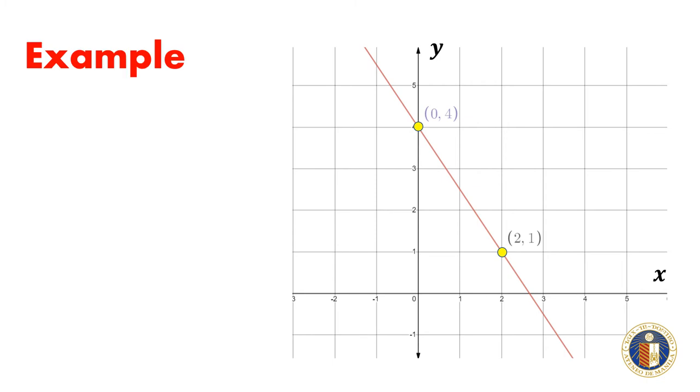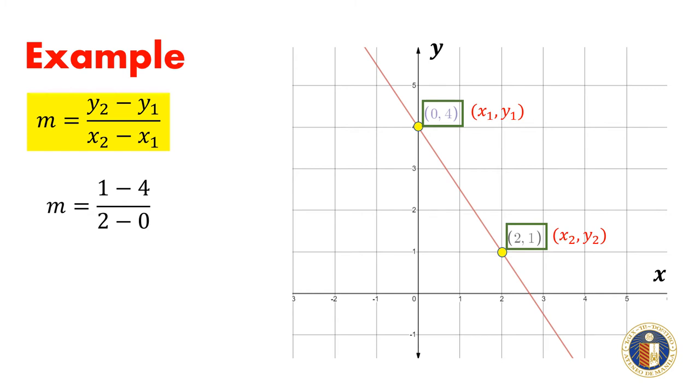In this example, we let the point (0, 4) be our (x₁, y₁) and the point (2, 1) be our (x₂, y₂). So the slope would be equal to m = (1 - 4) / (2 - 0), and m = -3/2. This can also be written as m = -3/2.